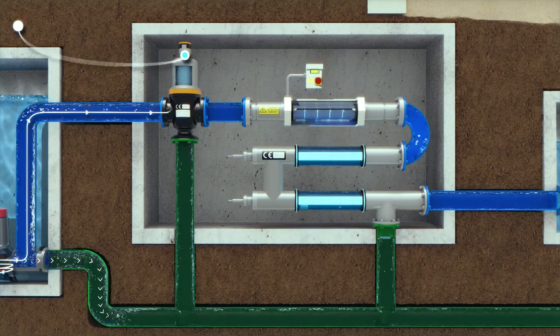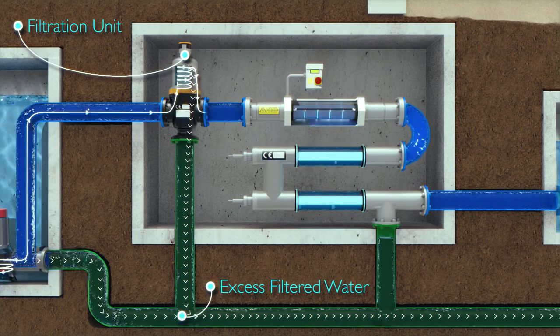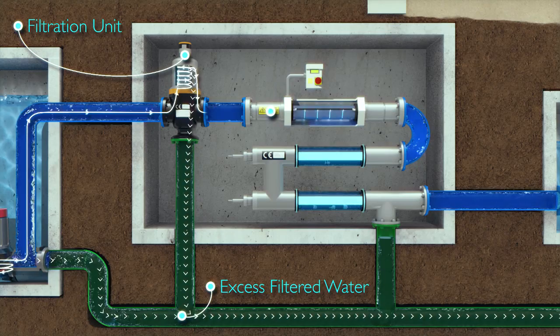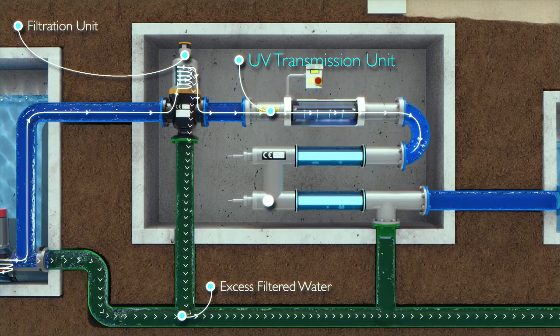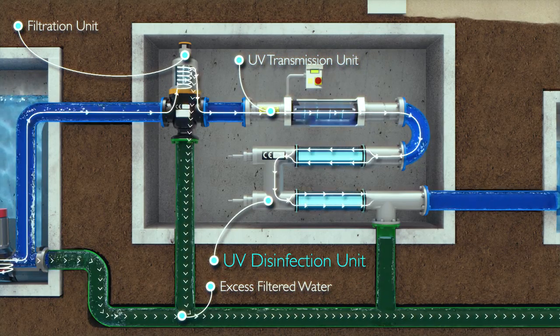The harvested water is then filtered through a fine screen to remove any remaining pollutants. It is then checked for quality before being disinfected using ultraviolet light.